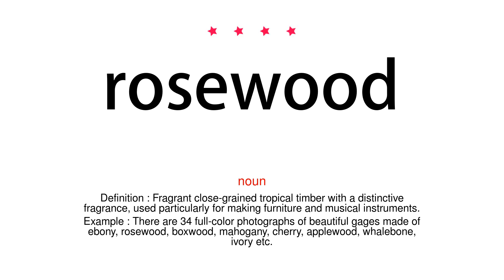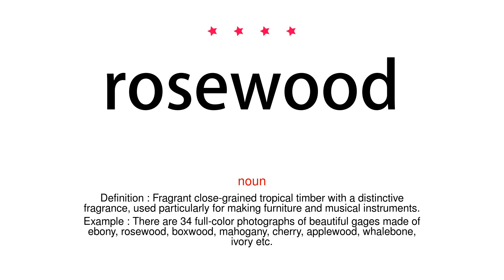Example: There are 34 full-color photographs of beautiful gauges made of ebony, rosewood, boxwood, mahogany, cherry, applewood, whalebone, ivory, etc.